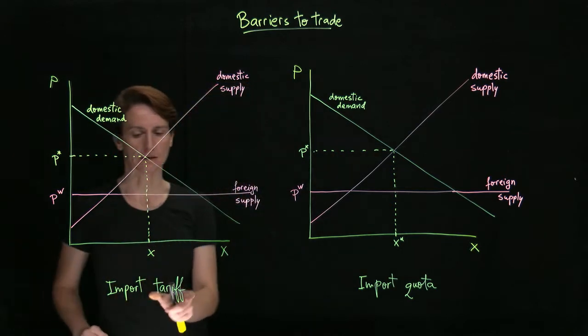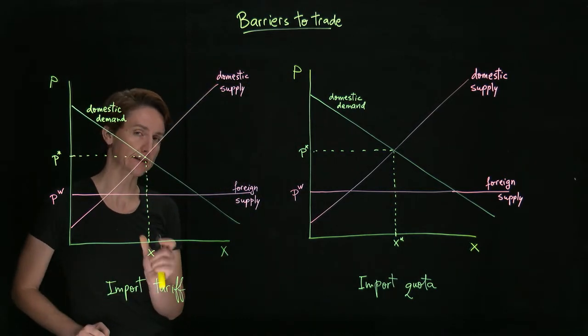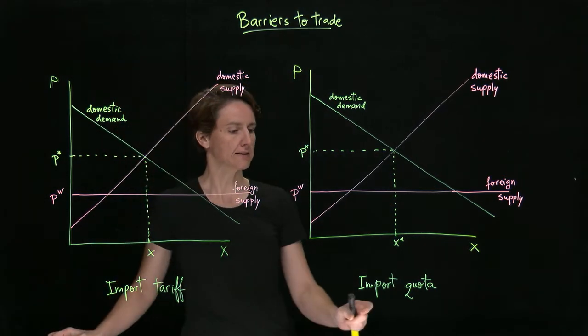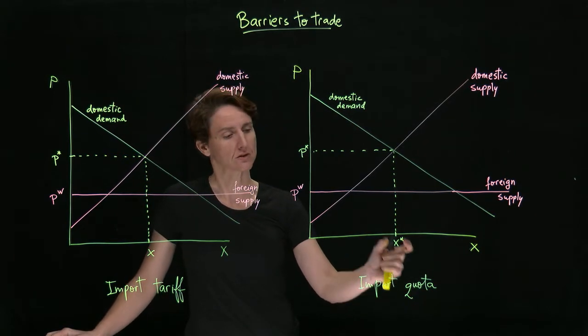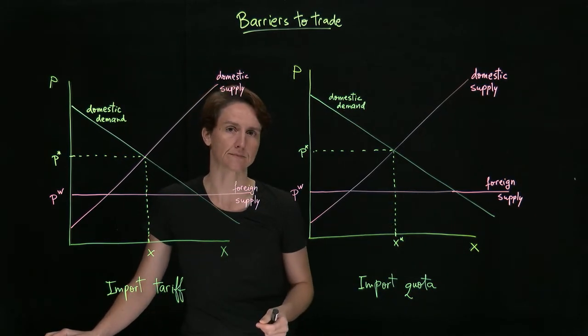One is by imposing a tariff, which is a tax on imports, and the other is a quota, which is a limit on the quantity imported.